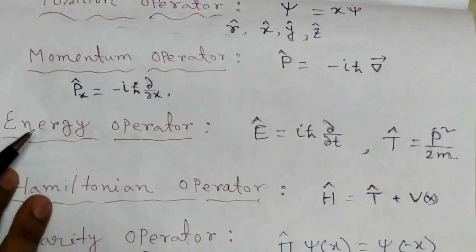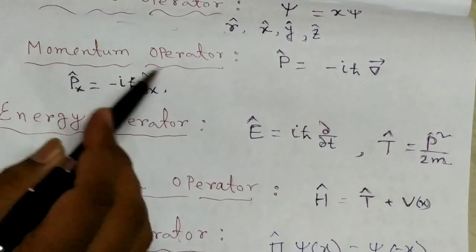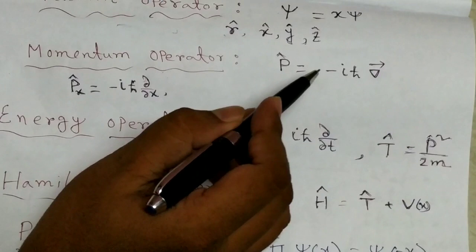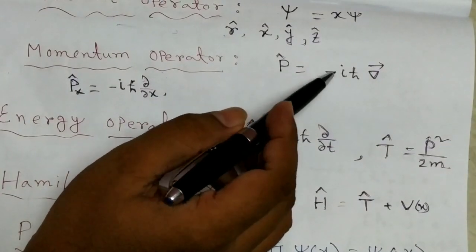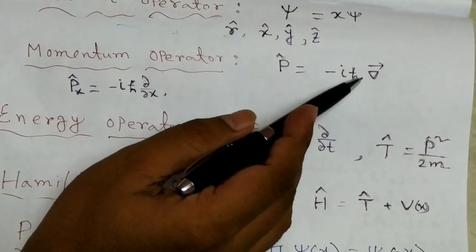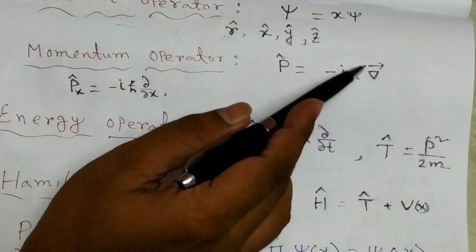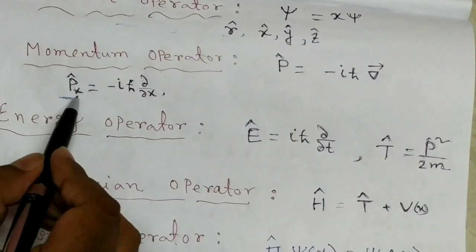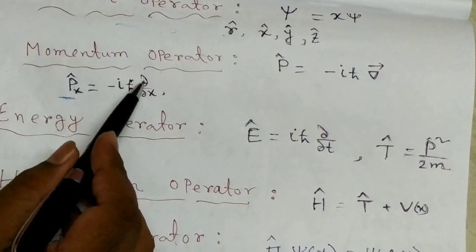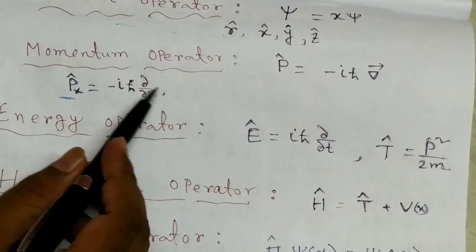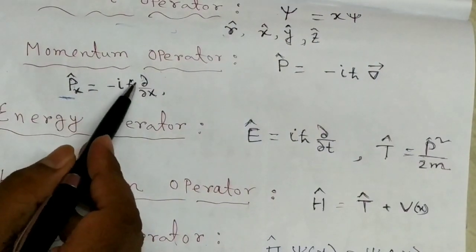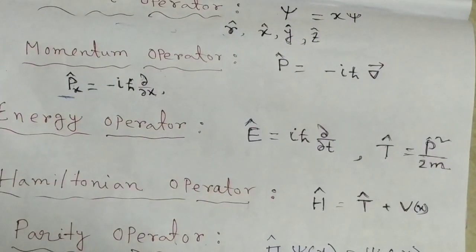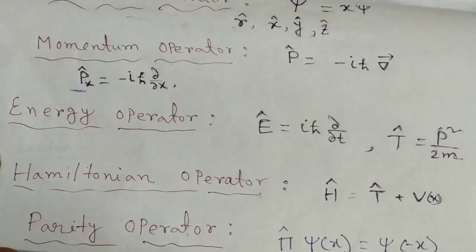Next, the momentum operator: P-cap equals minus i·h-bar times the gradient. For the x-axis it is minus i·h-bar·del/del-x, for the y-axis minus i·h-bar·del/del-y, and for the z-axis minus i·h-bar·del/del-z.